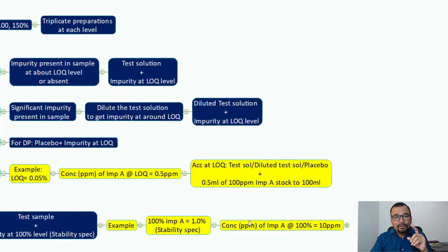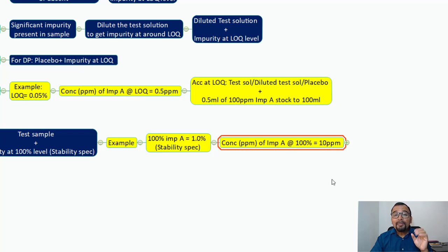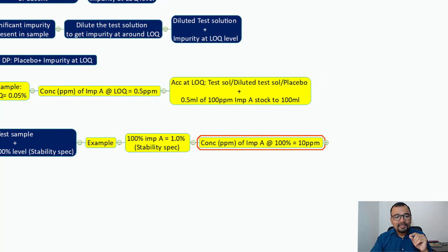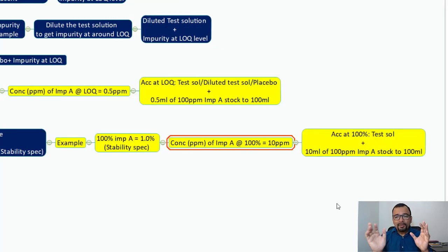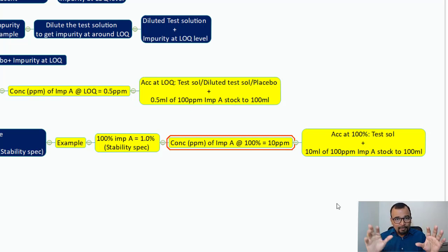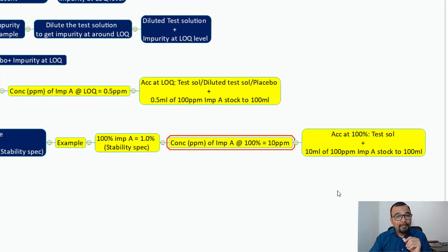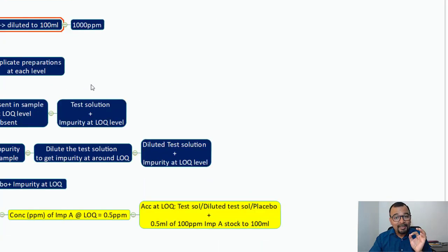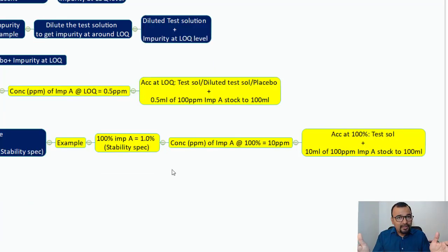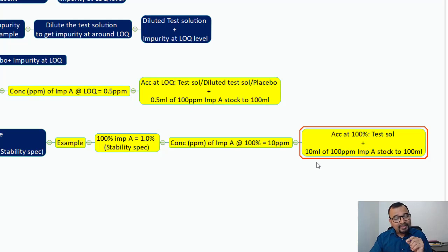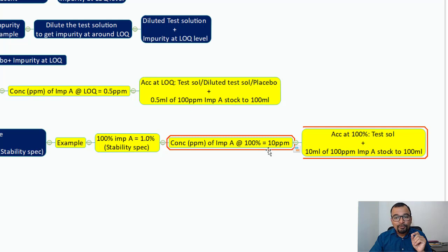The accuracy solution at 100% can be prepared by taking drug substance equivalent to 100 mg, then spiking 10 ml of 100 ppm impurity A stock solution, and diluting to 100 ml — the same dilution as the test solution preparation. If you calculate the concentration of impurity A spiked: 10 ml of 100 ppm diluted to 100 ml becomes 10 ppm, which is exactly our requirement at the 100% accuracy level.